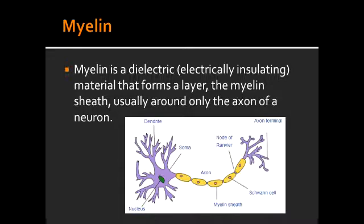What cells provide the myelin for the central nervous system? Oligodendrocytes provide the myelin for the central nervous system. What cells provide the myelin for the peripheral nervous system? Schwann cells provide the myelin for the peripheral nervous system.